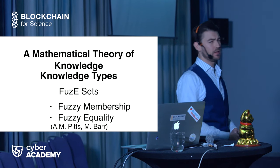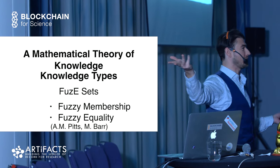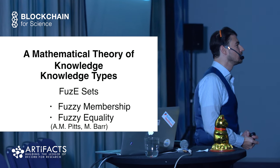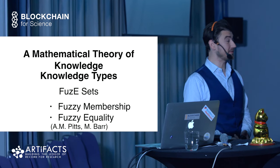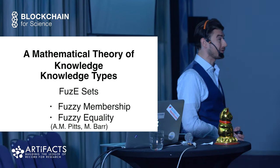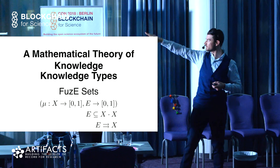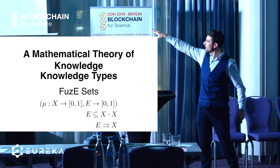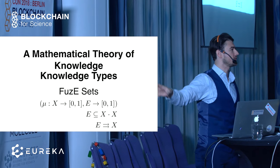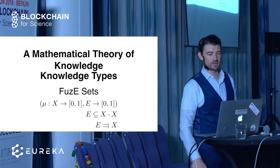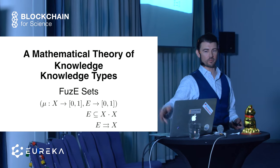There's these guys, A.M. Pitts, he first suggested it, and M. Barr, Michael Barr, who actually did this. And they came up with this thing which I call FuzE. I know that because it's funny because it gives you fuzzy equality. And so I call it FuzE sets. They don't do that. I do that. Hopefully that sticks. And yeah, these guys did a really great job with this. I highly recommend reading the paper, especially if you're into category theory. It's really good.